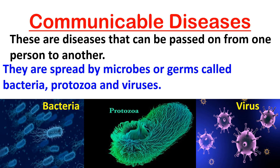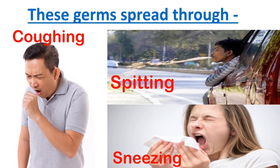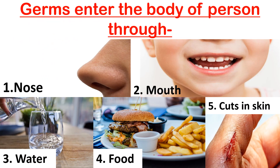Communicable diseases are diseases that can be passed on from one person to another. They are spread by microorganisms — also called microbes or germs — such as bacteria, protozoa, and viruses. These germs spread through coughing, spitting, and sneezing, and enter the body through the nose, mouth, water, food, and cuts in the skin.